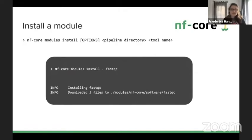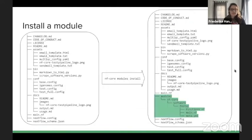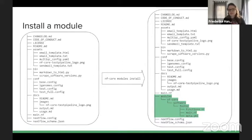If you find a module you'd like to install, you can run NF-core modules install with your pipeline directory and the tool name, and that will install the entire module for you. The module ends up in a subfolder called NF-core/software, where you can find the FastQC module with three files: functions.nf, main.nf, and meta.yaml. In the meta.yaml you can find documentation like input/output types, who wrote it, and what it does. In the main.nf, that's where FastQC is actually run, and in functions.nf there are helper functions.